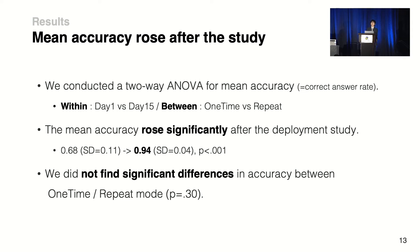We then verified the learning effect of Dual Check by analyzing mean accuracy — the mean correct answer rate. We conducted a two-way ANOVA to compare the two modes. Mean accuracy rose significantly after the deployment study. However, there was no significant difference between one-time mode users and repeat mode users.